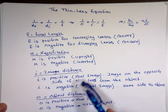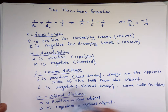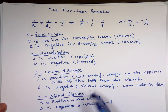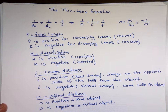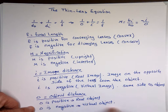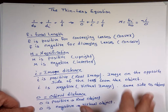Image distance I is positive means a real image on the opposite side of the object. I is negative means a virtual image on the same side as the object. O is positive for a real object, O is negative for a virtual object. The virtual object case comes up when you're dealing with more than one lens.